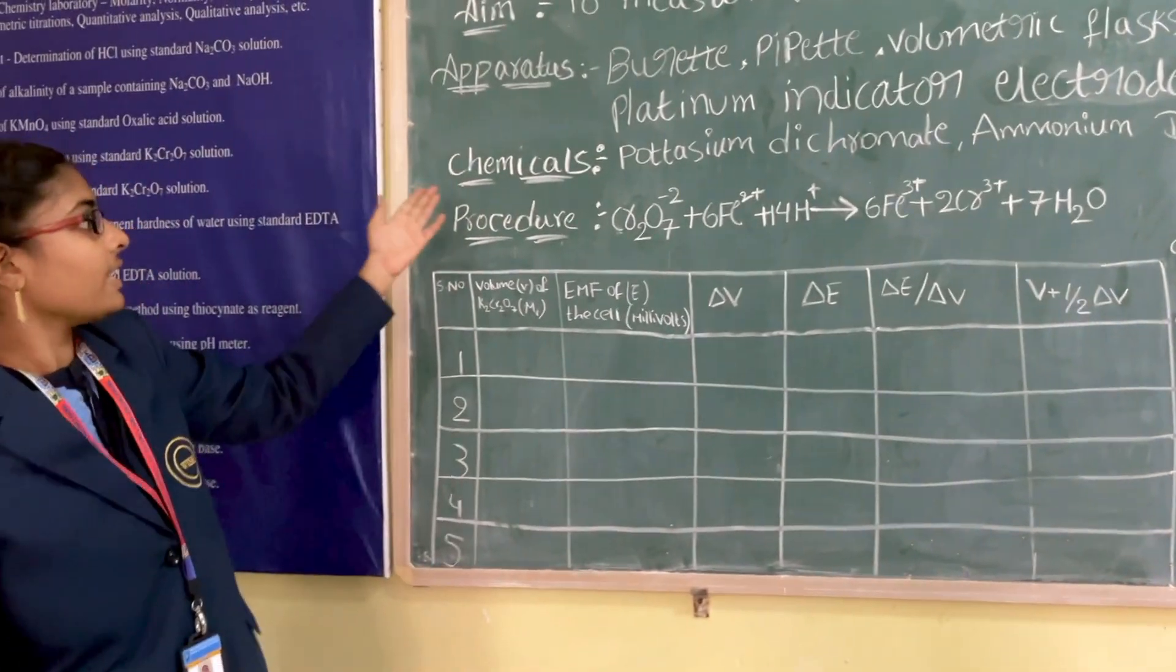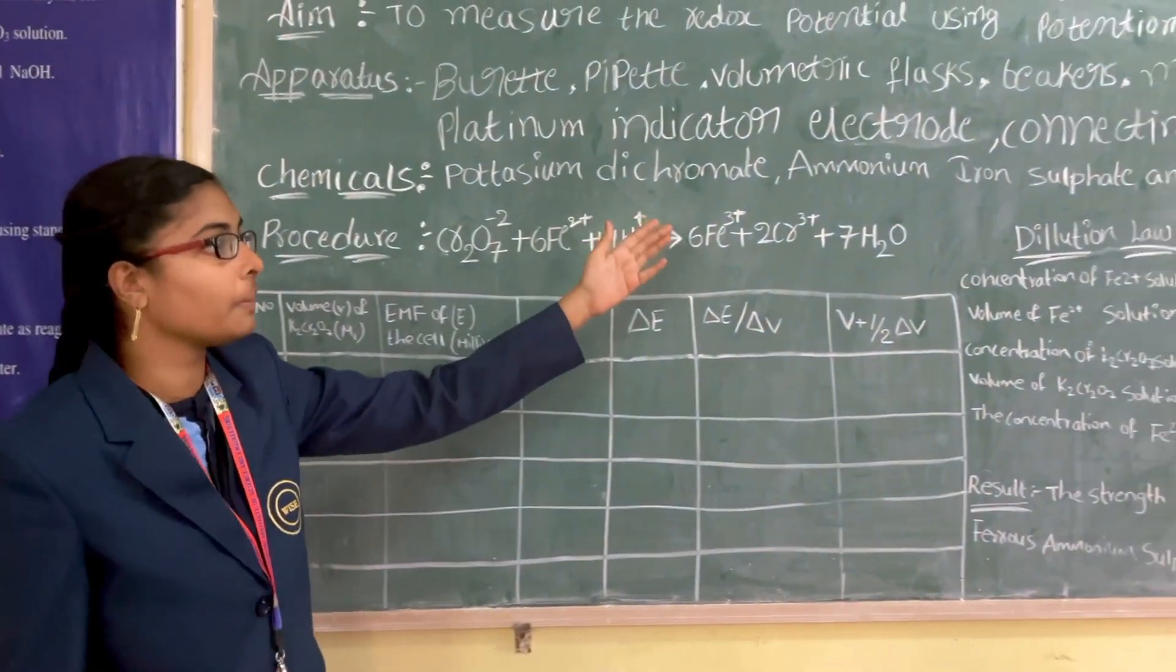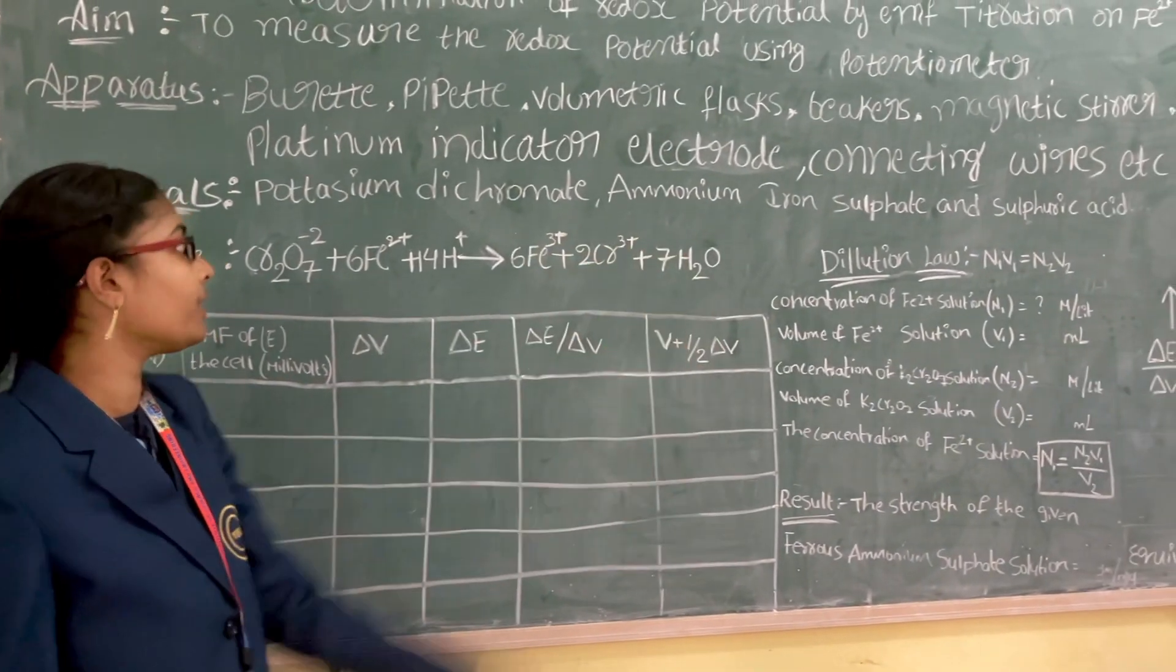And here are the chemicals: potassium dichromate, ammonium iron sulphate, and sulfuric acid.